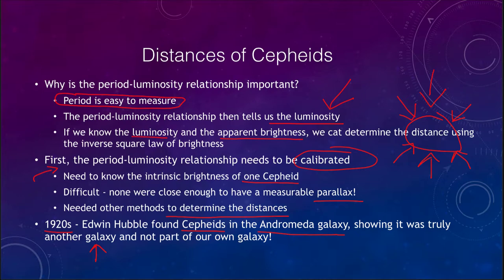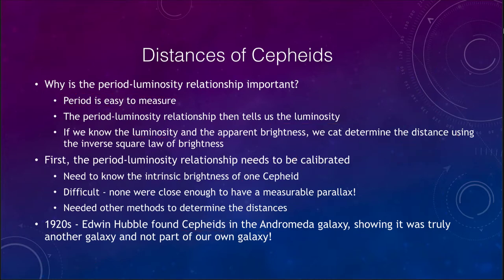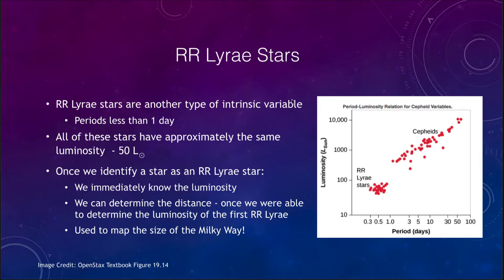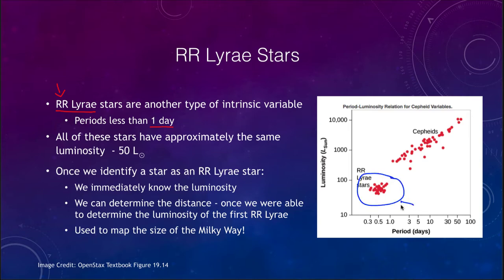Cepheids are not the only variable stars that can be used. Another related type is the RR Lyrae stars, named after the first one discovered — RR Lyrae — in the constellation of Lyra. These are like Cepheids but they all have very short periods of less than one day. On the period-luminosity relationship, all RR Lyrae stars fall at the low end, meaning they all have roughly the same period of about half a day.